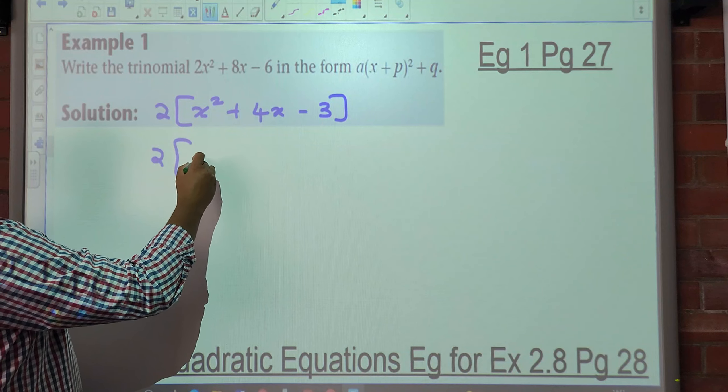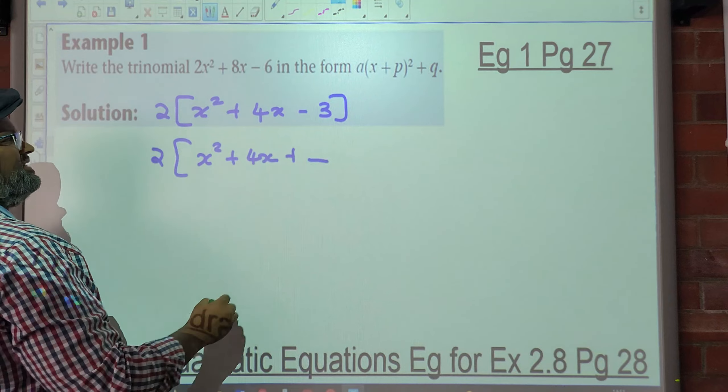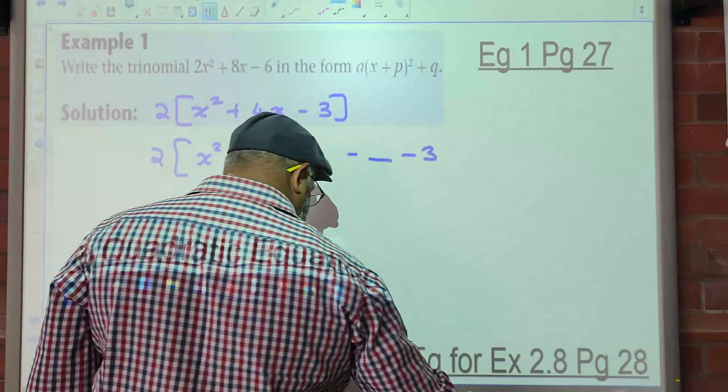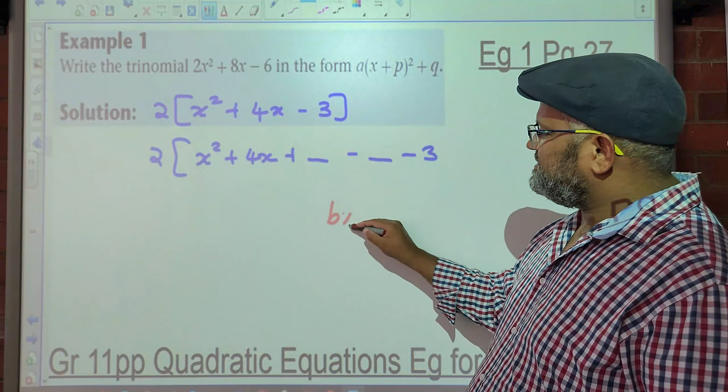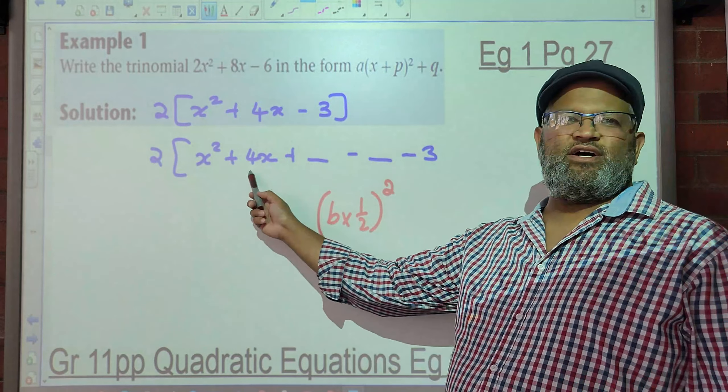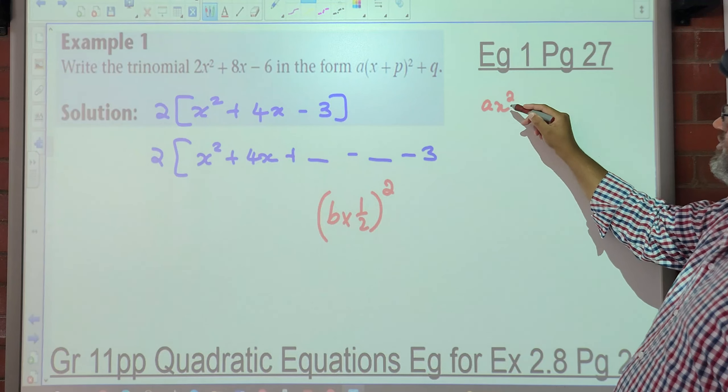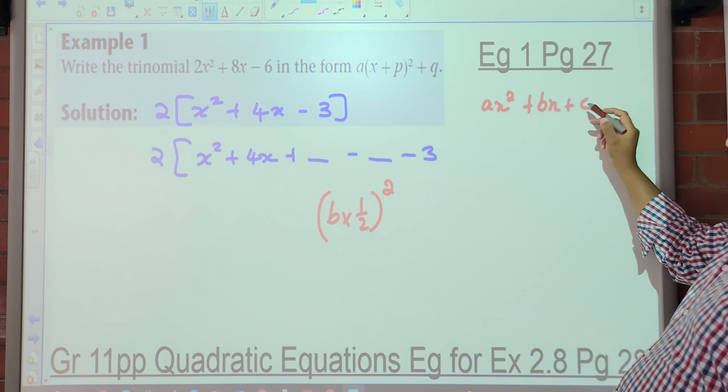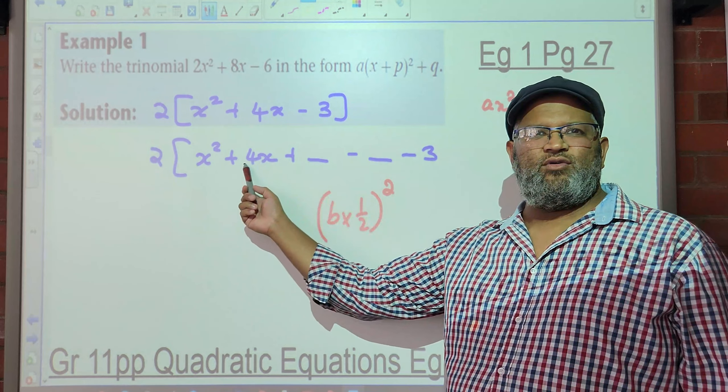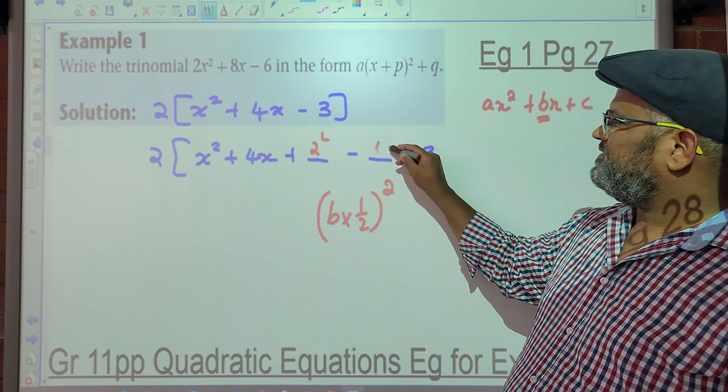So you get 2(x² + 4x plus a number minus the same number - 3). And what's this number in this case? It's going to be b times a half, and it must be squared. What's the b value here? 4. For those of you who are confused, remember the standard form of quadratic is ax² + bx + c. So it's b which is 4. What's 4 times a half? 2. And 2 squared is? 4.